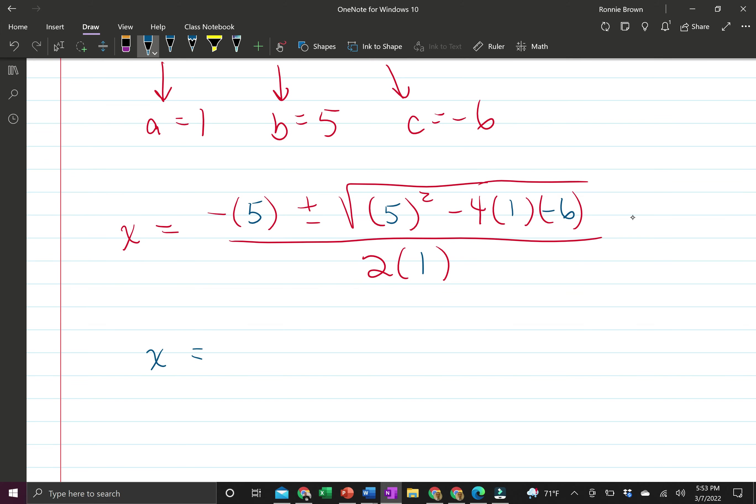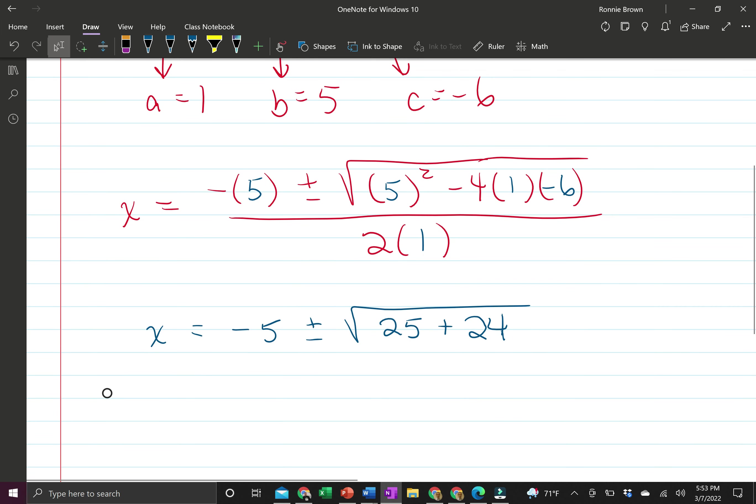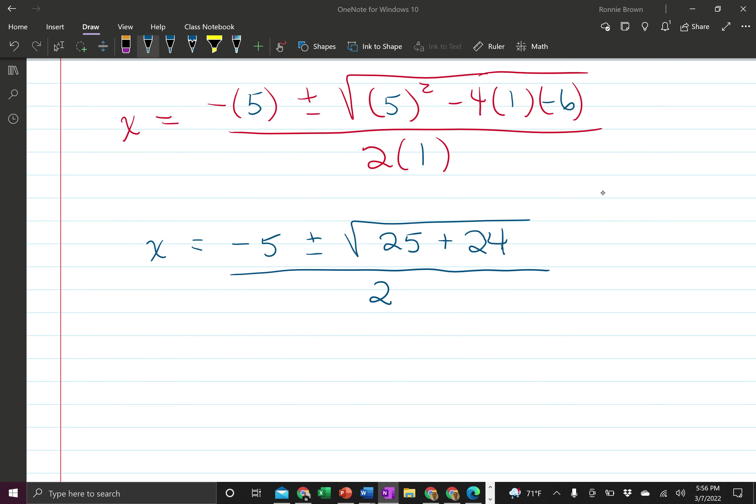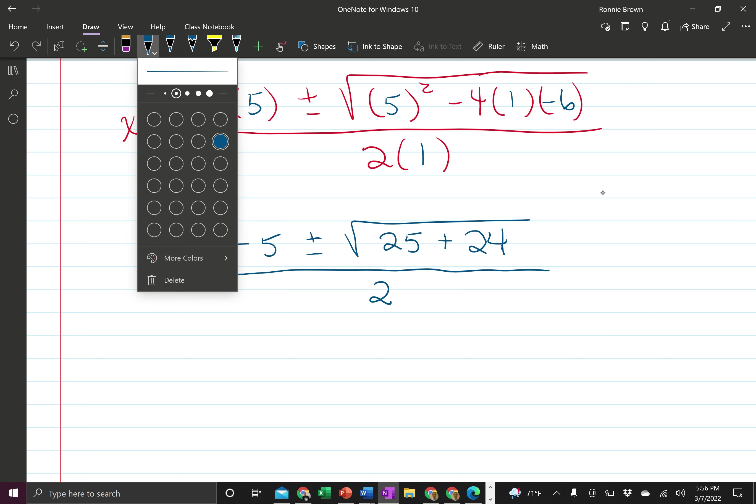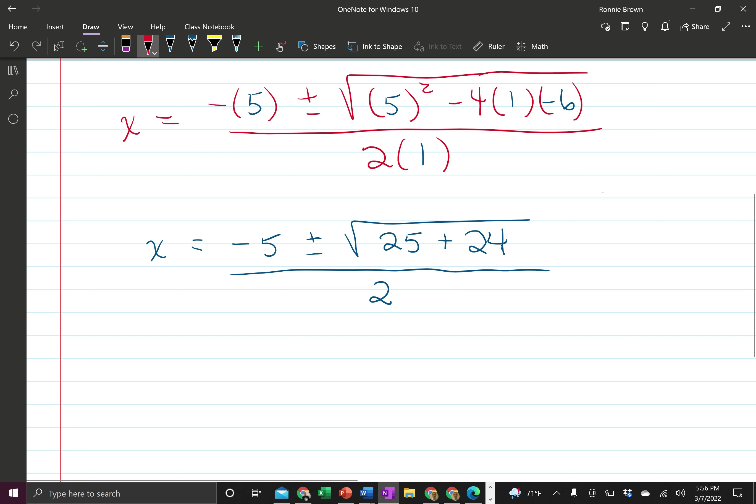After that, I'm just going to take care of the arithmetic. A negative 5 is what it becomes, plus or minus 5 squared is 25. And then negative 4 times 1 is negative 4, and that negative 4 times negative 6 is a positive 24. The sign is dictated by what you're doing as far as your multiplication of signed numbers. In the denominator, 2 times 1 is 2.